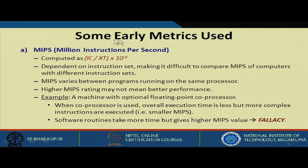Let us see some early metrics that are used. One is MIPS — millions of instructions per second. This is computed as instruction count divided by execution time, multiplied by 10 to the power minus 6.